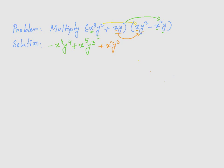Then xy times negative x squared y is going to give me negative x cubed. x times x squared is x cubed, then y times y is going to be y squared.